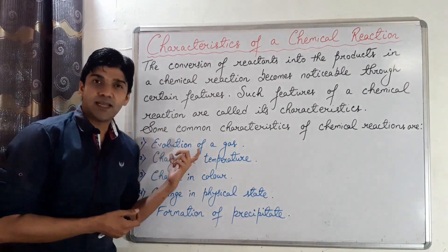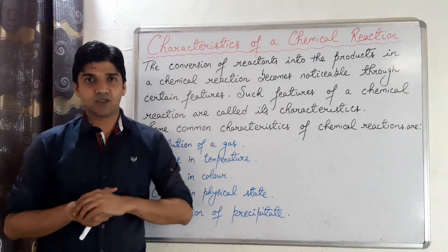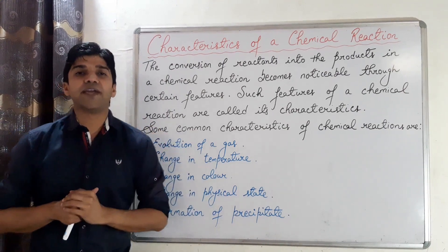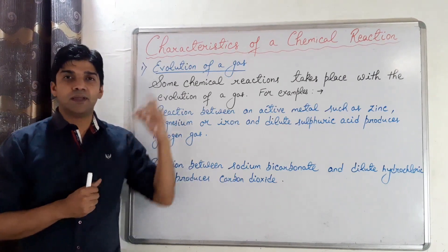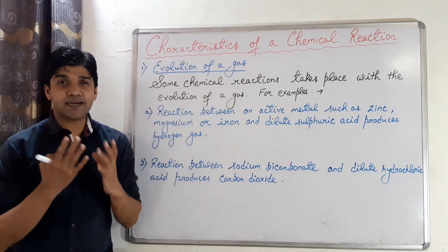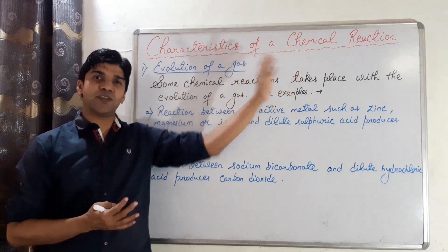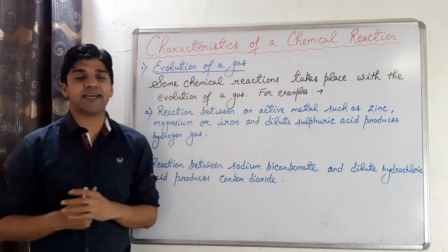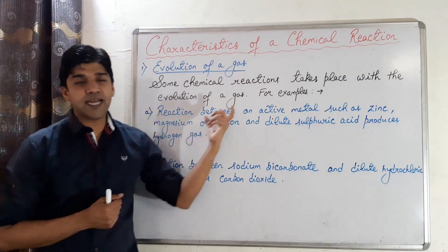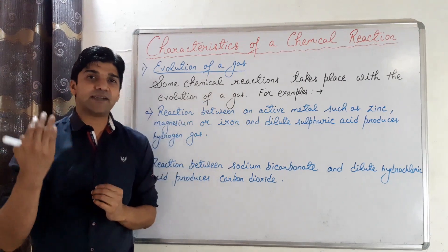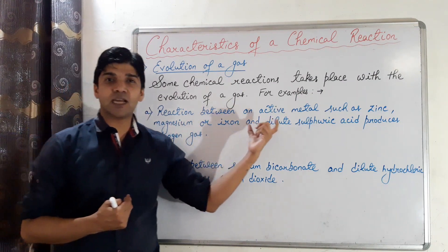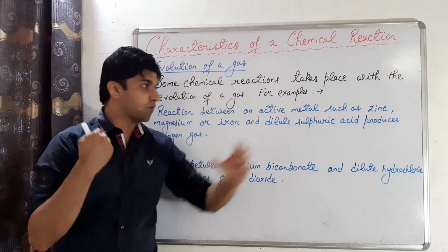We will discuss these characteristics one by one. The first characteristic feature of a chemical reaction is evolution of a gas. Some chemical reactions take place with the evolution or liberation of a gas. For example, active metals such as zinc, magnesium, or iron react with dilute sulphuric acid to produce hydrogen gas.